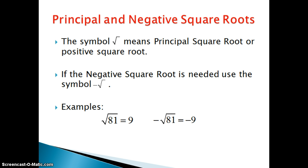For example, if we have the square root of 81 that's equal to positive 9. But if we have the negative square root of 81 that is equal to negative 9.